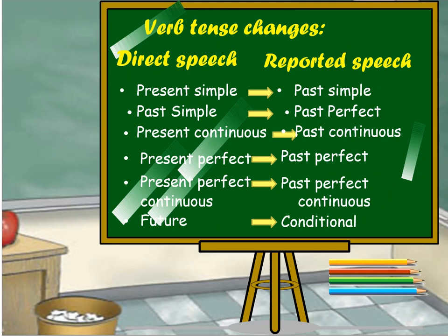Verb tense changes between direct speech and reported speech. Present simple becomes past simple. Past simple becomes past perfect. Present continuous becomes past continuous. Present perfect becomes past perfect.